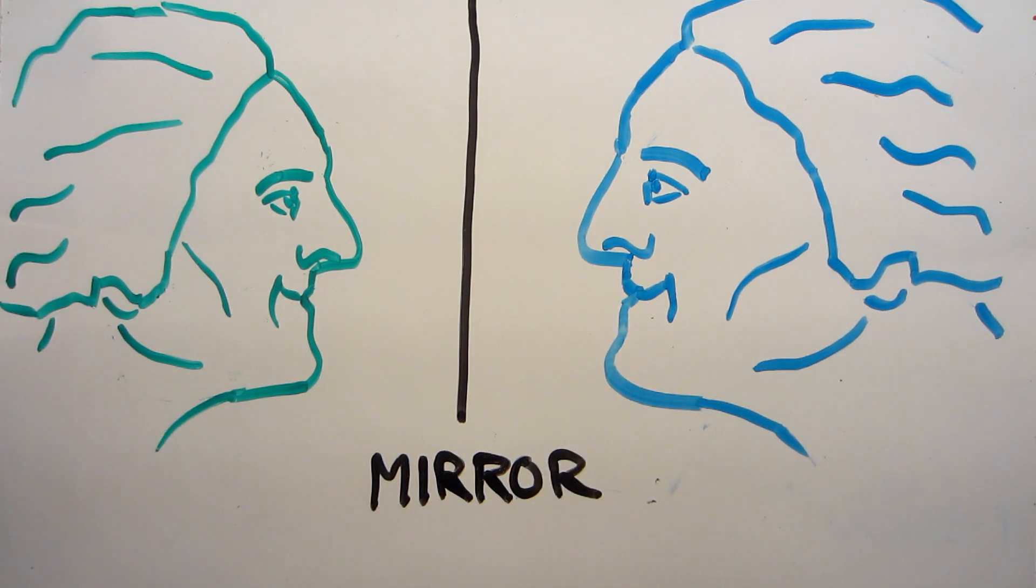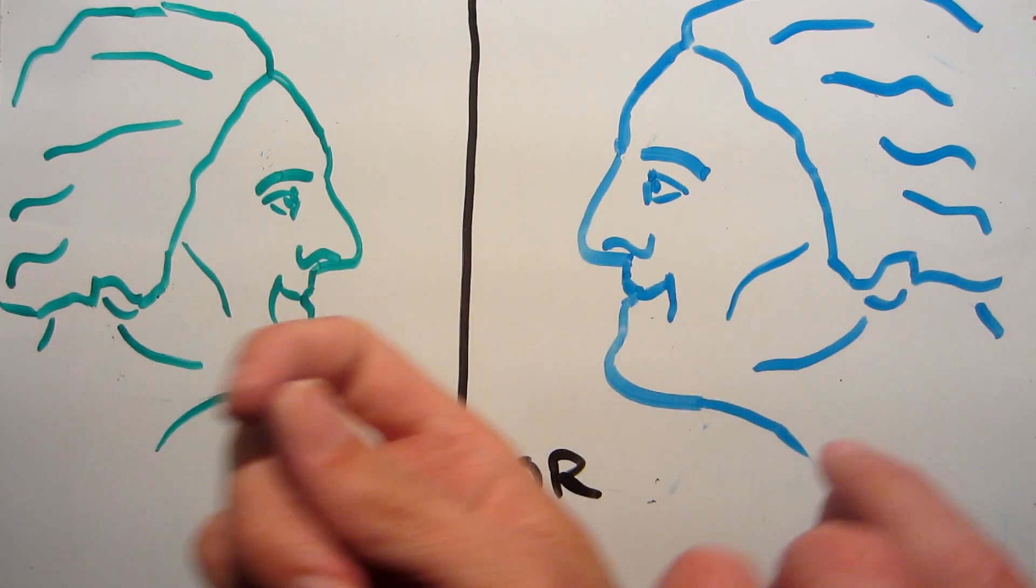So when you look at yourself in a mirror, you haven't been flipped left to right or up and down. Really the mirror has inverted you across its surface, effectively pulling your nose out through the back of your head.